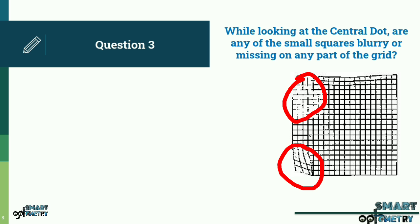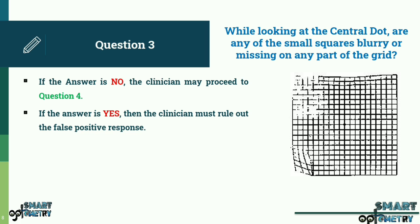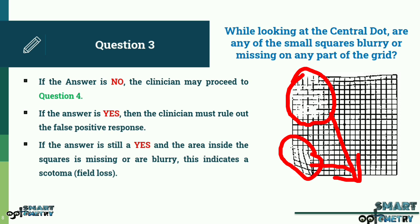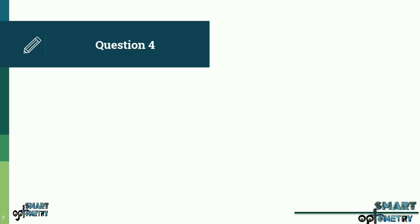Question 3: While looking at the central dot, are any of the small squares blurry or missing on any part of the grid? The patient is asked to continue looking at the central dot while answering. If the answer is no, the clinician may proceed to question 4. If yes, the clinician must rule out a false positive response that may occur due to media opacities or incorrect prescription. If the answer is still yes and the area inside the squares is missing or blurry, this indicates a scotoma, i.e. field loss. The patient must locate the area with the missing or blurry squares, outline it with a pen, and record it on the chart.